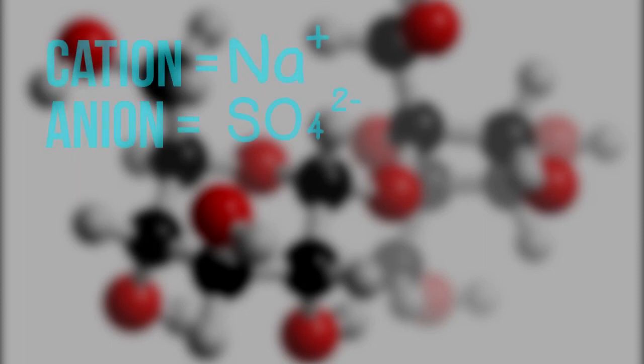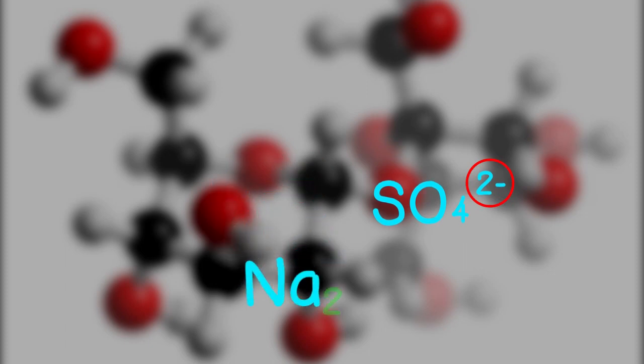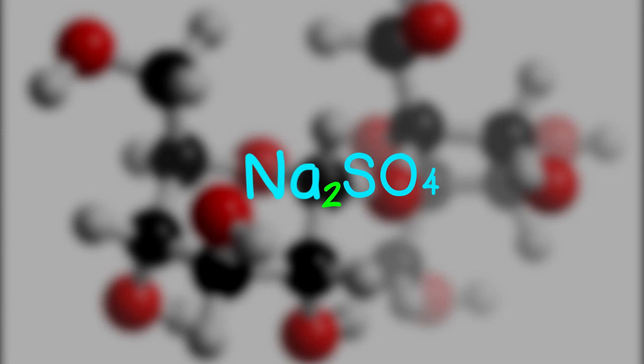When you have distinguished the cation and anion, balance the charges to name your ionic salt. The cation always appears first followed by the anion. Because sulphate has twice the charge of sodium, then twice as much sodium must be present in the salt. Therefore the salt is Na2SO4 or sodium sulphate.